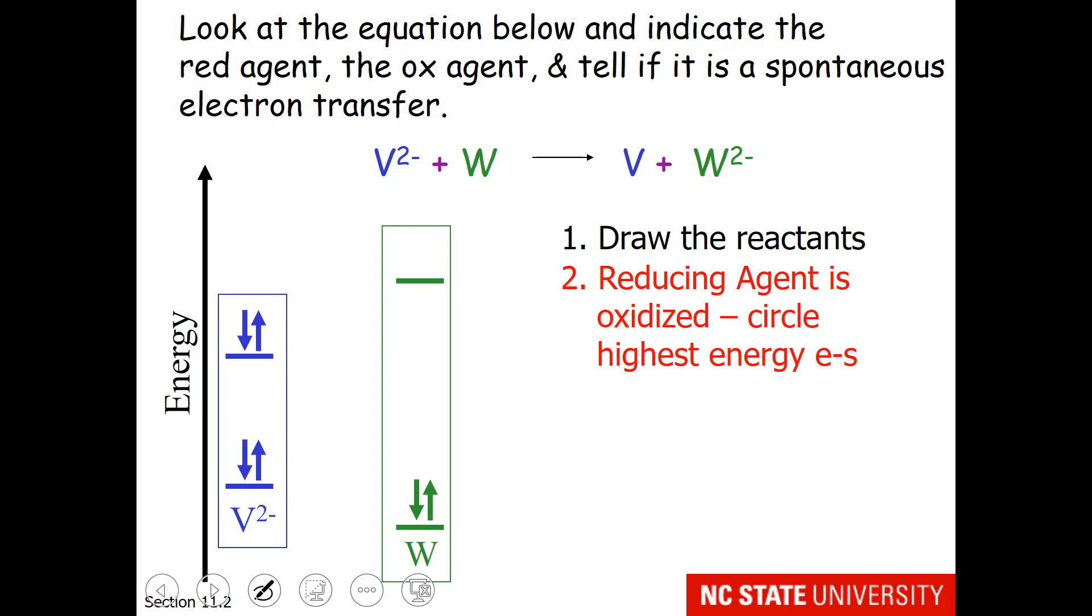My next step is to find the reducing agent. Once again, V2 minus has a minus two oxidation state. W is zero, V is zero, and W2 minus is minus two. So the reducing agent is oxidized. So I'm either going from minus two to zero, or zero to minus two. Well, I would have to say that the reducing agent is the V2 minus. It's going upward in oxidation state. So I am going to circle the highest energy electrons that belong to V2 minus. So those would be the outermost ones.